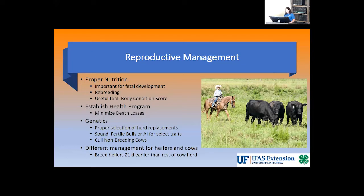Genetics is also important in reproductive management. Genetic traits are equally shared by the heifer or cow and the bull. Proper selection of herd replacements will assist in minimizing reproductive problems. You must select for sound and fertile bulls if naturally breeding; this may be achieved by understanding expected progeny differences, also known as EPDs. If artificially inseminating, one will select desired traits using EPDs as well. It is also important to cull non-breeding cows. Breed heifers 21 days earlier than the rest of the cow herd.